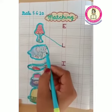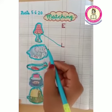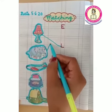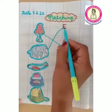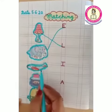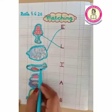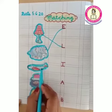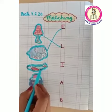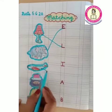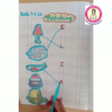Next is E. E for elephant. Next is A. Where is A? Good job.